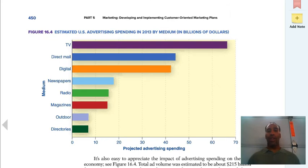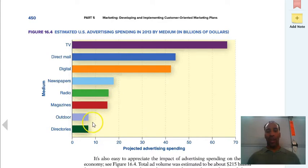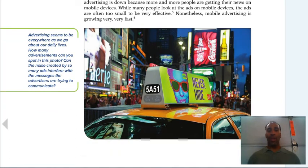Looking at estimated U.S. advertising spending in 2013 by medium, these are billions of dollars. TV is nearly 70 billion dollars. Direct mail is next. Digital is growing rapidly — I get flooded with emails around Black Friday and Cyber Monday. Newspapers, radio, magazines, outdoor, and directories have all diminished in the current media landscape.